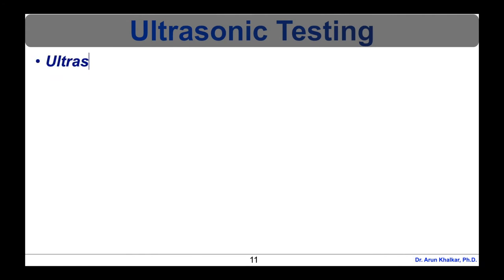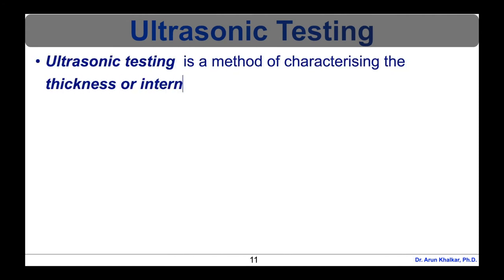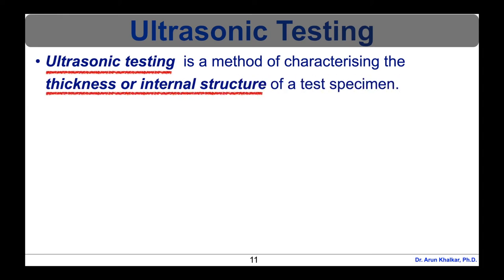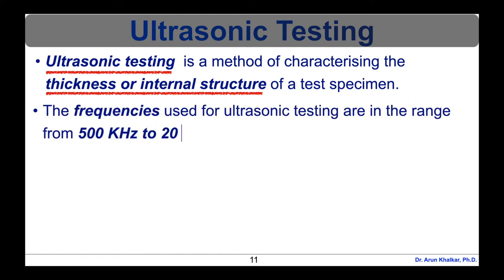Now let's see what is ultrasonic testing. Ultrasonic non-destructive testing, also known as ultrasonic NDT or simply UT, is a method of characterizing the thickness or internal structure of a test piece through the use of high frequency sound waves. The frequencies used for ultrasonic testing are many times higher than the limit of human hearing, most commonly in the range from 500 kHz to 20 MHz.